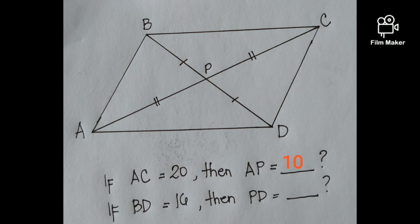Another example, if BD is equal to 16, then PD is equal to blank. Again, since we know that BP and PD are congruent, so if BD is equal to 16, just divide 16 by 2. So 16 divided by 2 is equal to 8. That will be the value of PD.